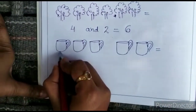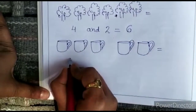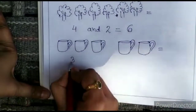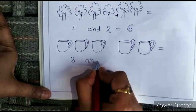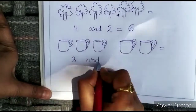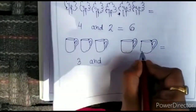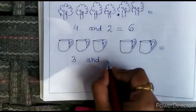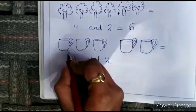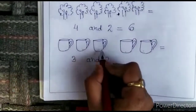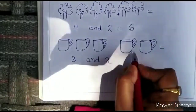One, two, three. Three cup one side. One, two, three, four, five. One, two. Two is equals to one, two, three, four, five.